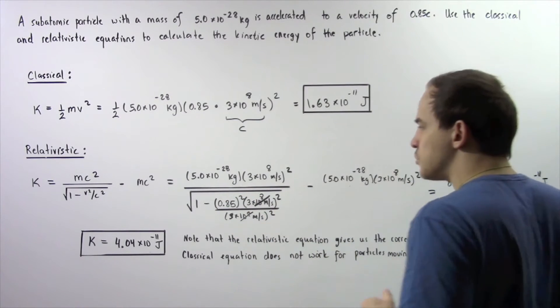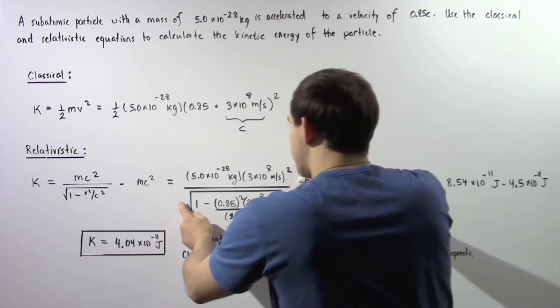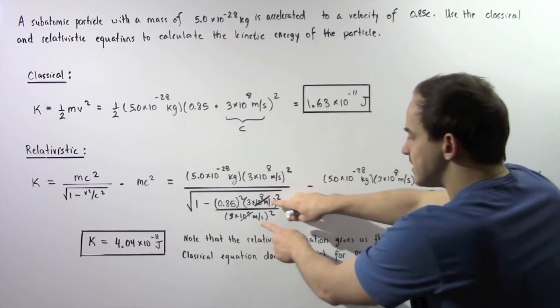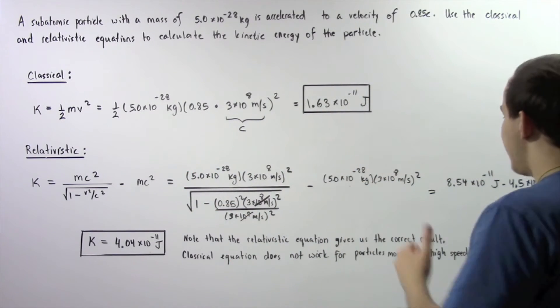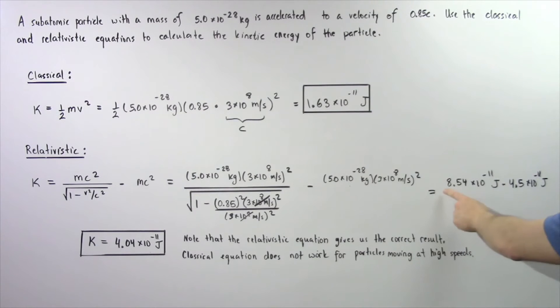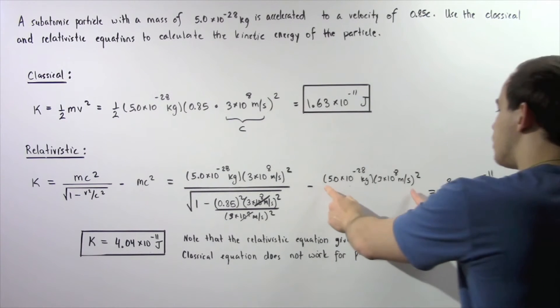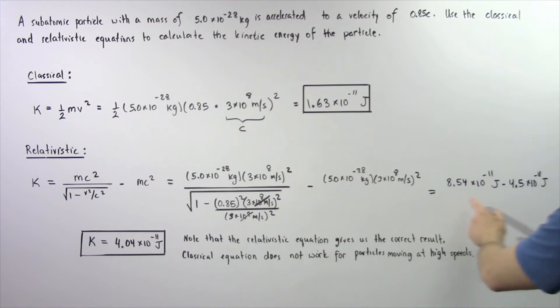We plug in our values. We see that this term is given here. Notice the c squares will cancel. If we plug these into our calculator, we get a value of positive 8.54 times 10 to the negative 11 joules, and the rest mass energy is 4.5 times 10 to the negative 11 joules.